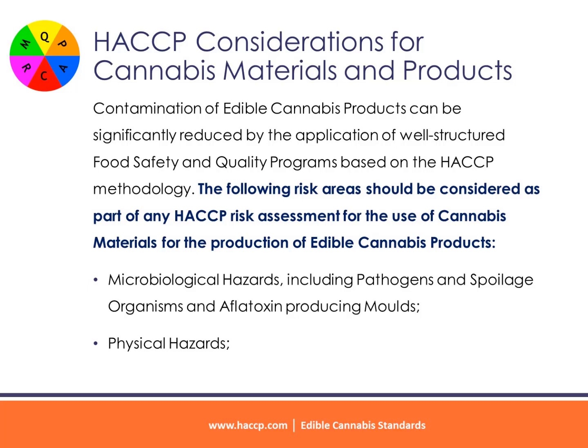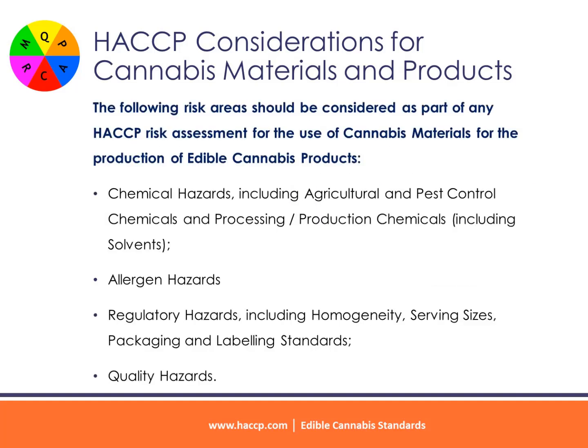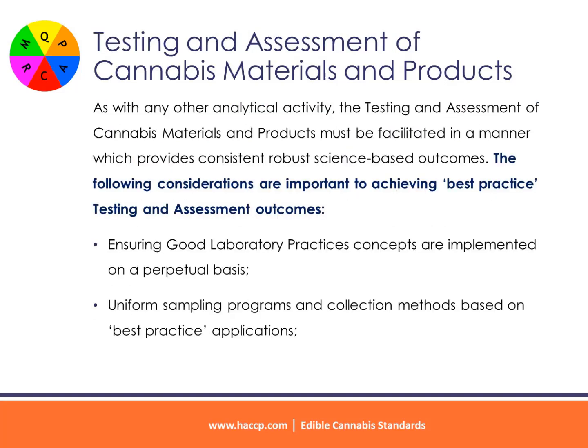The following risk areas should be considered as part of any HACCP risk assessment for the use of cannabis materials: microbiological hazards including pathogens, spoilage organisms, and aflatoxin-producing molds; physical hazards; chemical hazards including agricultural and pest control chemicals, processing/production chemicals, and solvents; allergen hazards; regulatory hazards including homogeneity, serving sizes, packaging, and labeling standards; and quality hazards.